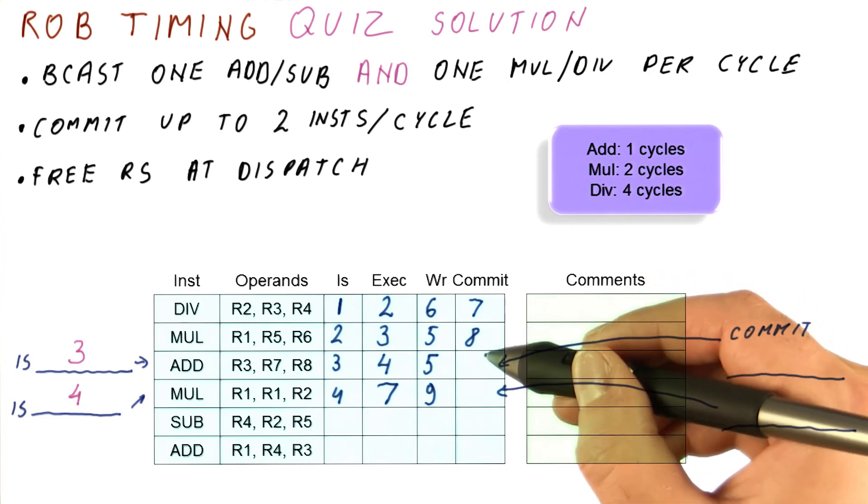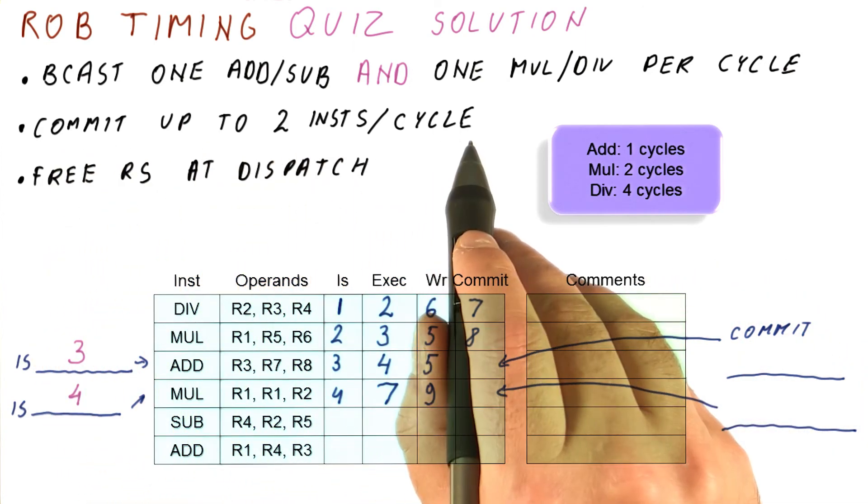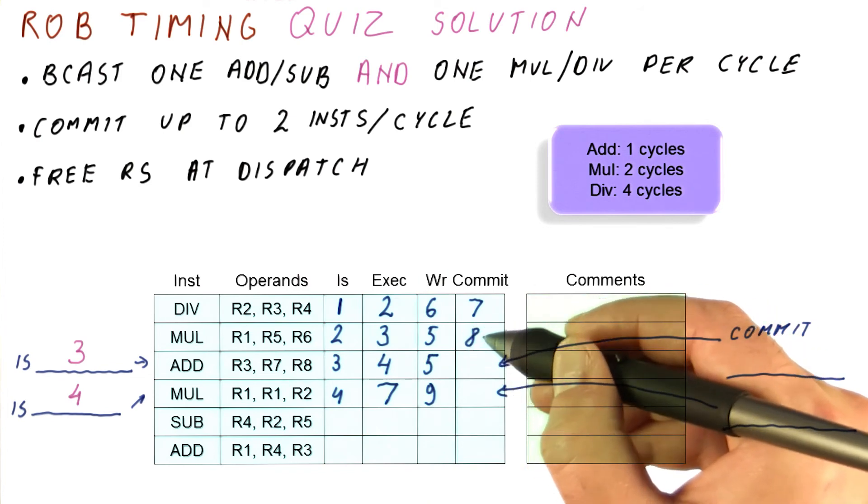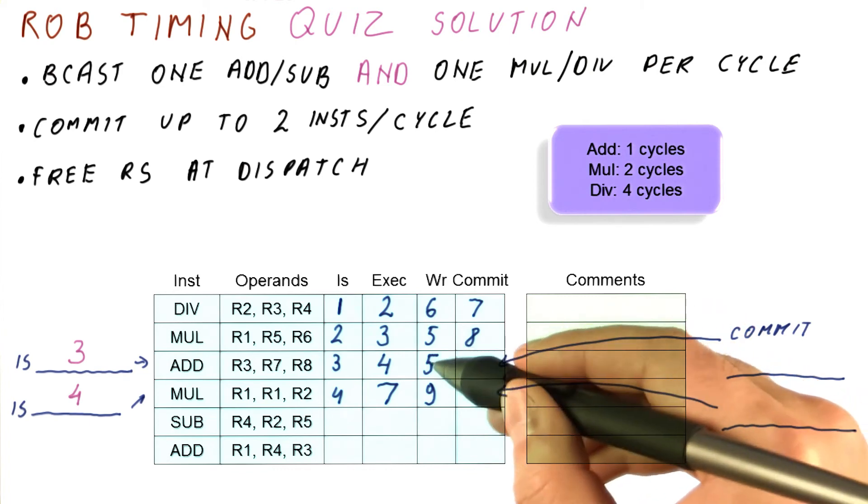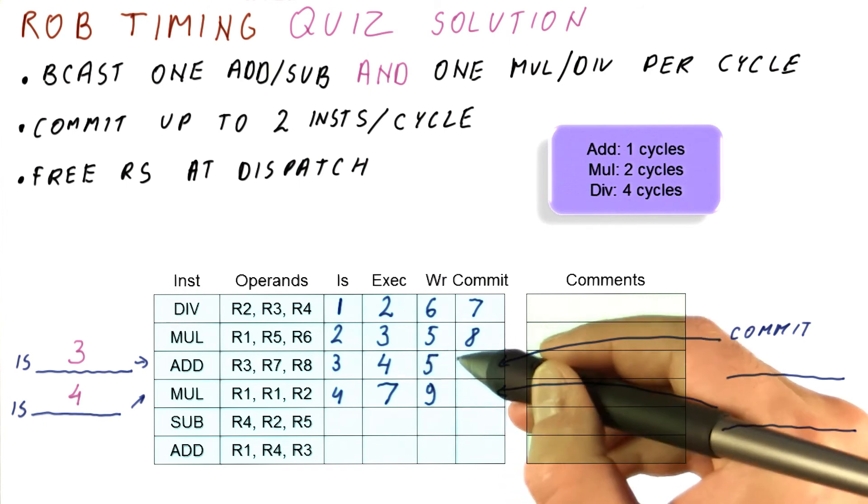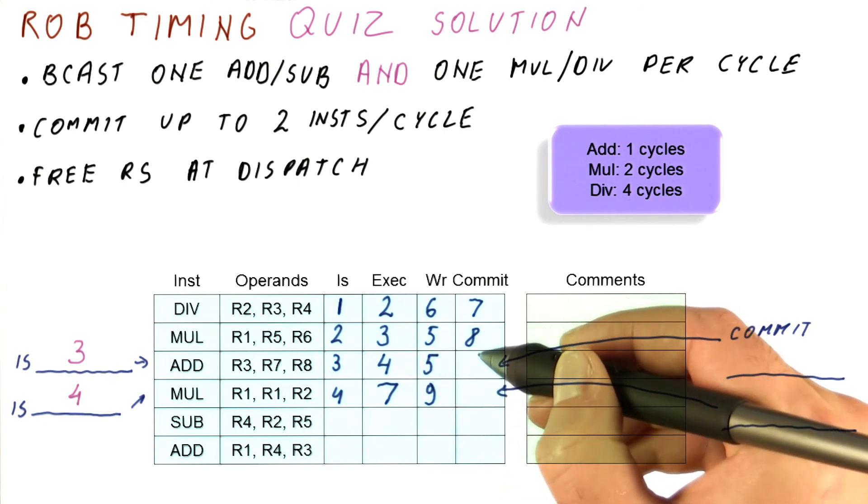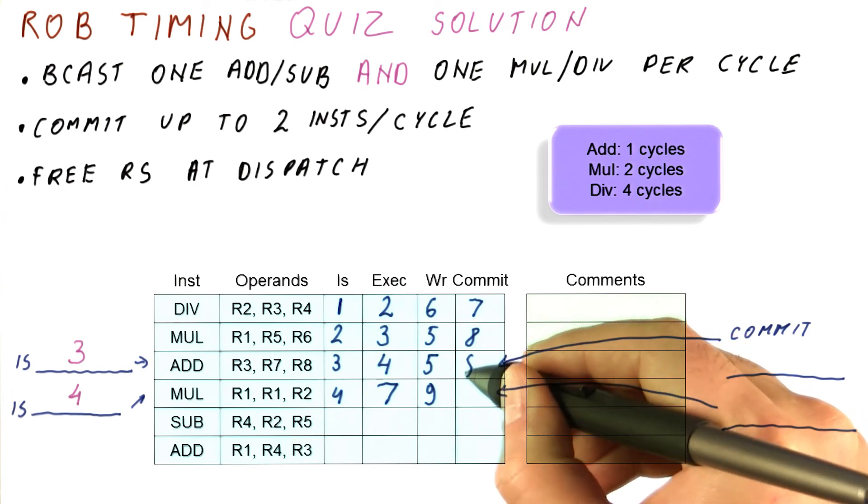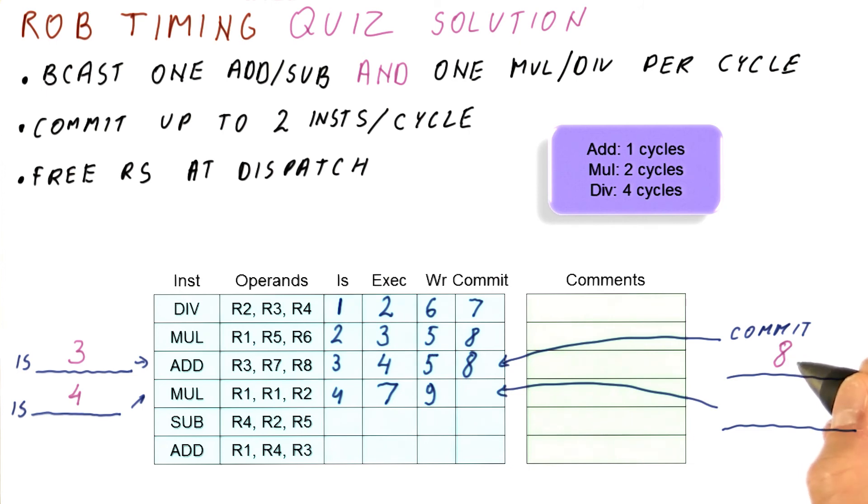Now we are ready to figure out the commit. We said that we can commit up to two instructions per cycle. In cycle eight, we are committing the multiplication here. The question is, can we commit another instruction in that same cycle? Because normally we could, if that instruction is done. And indeed it is. Because this instruction has been ready to commit since cycle five. All it was waiting for is for the commit point to reach there. So in cycle eight here, we will commit it. Thus the correct answer for the commit here is eight.